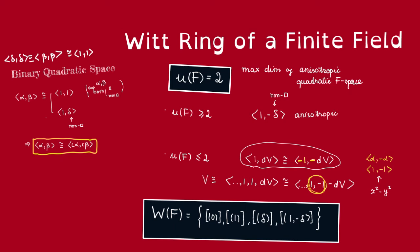Thus, for the Witt ring, we only need to consider the quadratic space of dimension 1 and 2. Let's start with those of dimension 1. So we have two isometry classes of quadratic spaces. And these are going to be distinct because this form represents squares, whereas this one does not represent square.